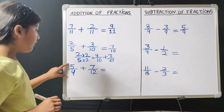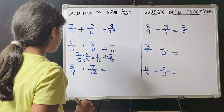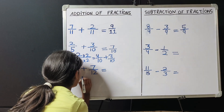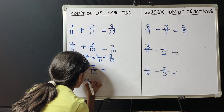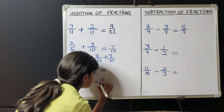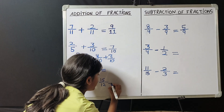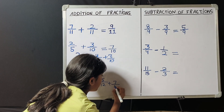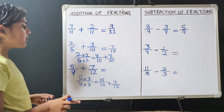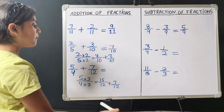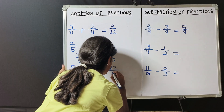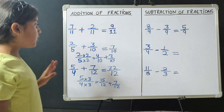Similarly, 5 upon 4 plus 7 upon 12. Here, 4 multiplied by what will give you 12? 4 times 3 is 12. So we will multiply 5 by 3 and 4 by 3. So 5 times 3 is 15 and 4 times 3 is 12, plus 7 upon 12. Now, as the denominators are the same, we will just add the numerators. So 15 plus 7 is 22 and we will write this 12 as it is. So 22 upon 12 is the answer.